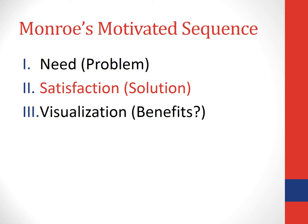Once we've made our miniature argument proving there is a need or problem, we then have to satisfy that need or solve that problem. What you need is a specific plan of action that solves the exact problem you've pointed out. In this case, my solution is to ban plastic bags. In my research, I found that the only 100% effective way to solve the problem of plastic bags is to stop producing and using them in the first place — and I need to go back to my research to prove this solution works.